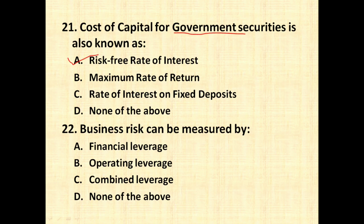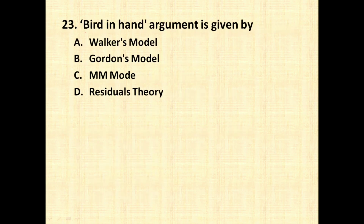The next question is: business risk can be measured by what? We usually talk about two main types of risk in financial management. Business risk is the risk relating to paying fixed costs, and it is measured by operating leverage. Financial risk is the other main type, and it is measured by financial leverage. So remember: business risk → operating leverage, and financial risk → financial leverage.